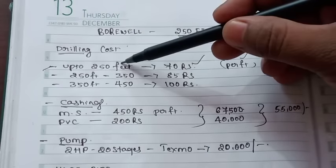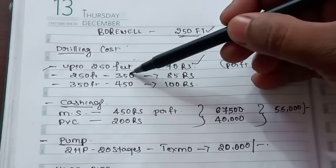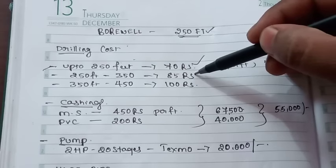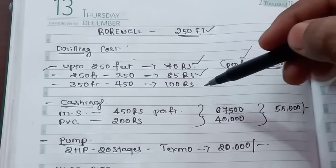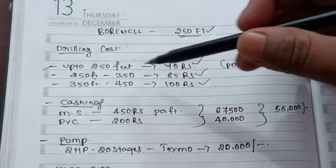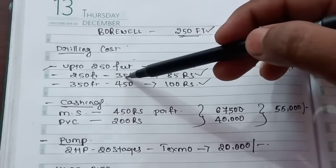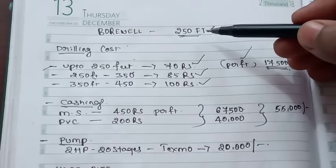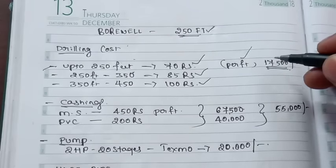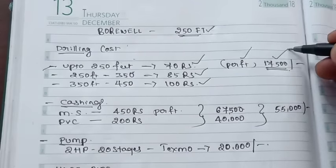Between 250 feet and 350 feet, the rate is 85 rupees per foot. From 350 feet to 450 feet, the rate is 100 rupees per foot. For 250 feet, the total drilling cost is about 17,500 rupees.